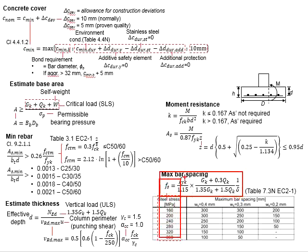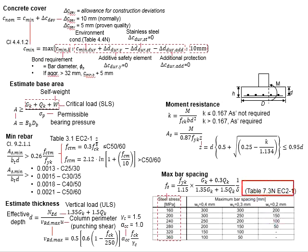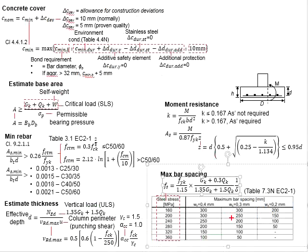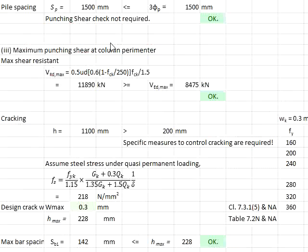Use the formula to determine the stress in the reinforcement bar, which is the ratio of the quasi-permanent load to the ultimate load. Refer to Table 7.3N in Eurocode 2 for a crack width of 0.3 mm, interpolate, and determine the maximum spacing. Substituting Gk and Qk into the equations gives a stress in the reinforcement bar equal to 218 N/mm². From Table 7.3N in Eurocode 2, interpolating for a crack width of 0.3 mm, the maximum allowable spacing is 228 mm.